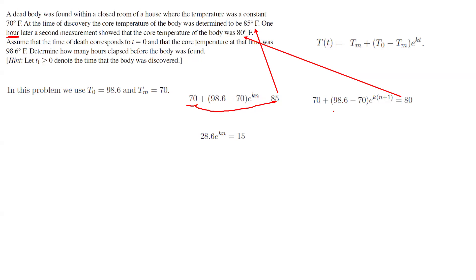Bring 70 to the other side. And then it becomes 28.6 e to power Kn plus K, which is 28.6 e to power Kn, e to power K equals to 10. But again, note that 28.6 e to power Kn is just 15. To substitute it right here, wherever you see 28.6 e to power Kn, use 15. So this equation becomes 15 e to power K equals to 10.